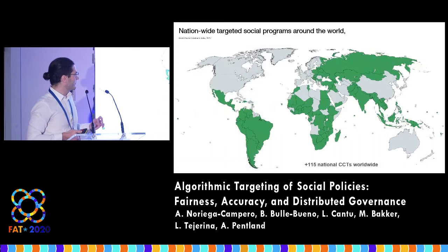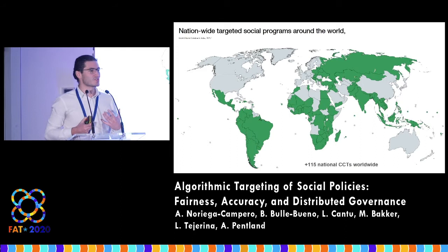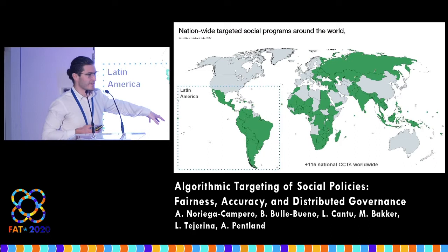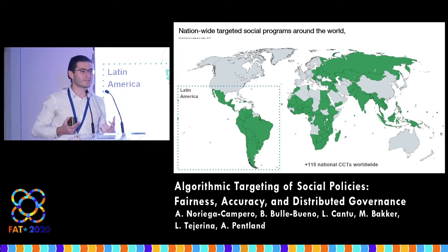This map here paints in green countries that have the majority of their social budget being targeted. You can see that Latin America is basically covered by that approach, but also most of Africa, Southeast Asia, and Eastern Europe. So the developing world targets their social policies.